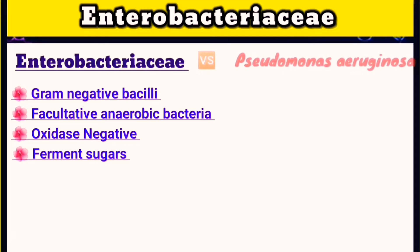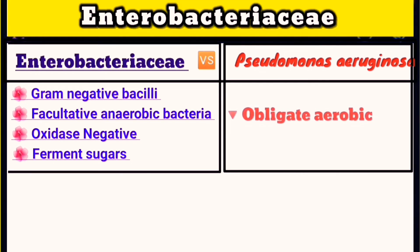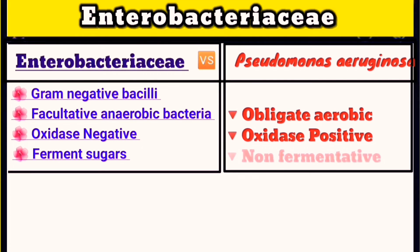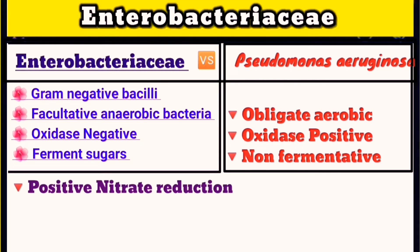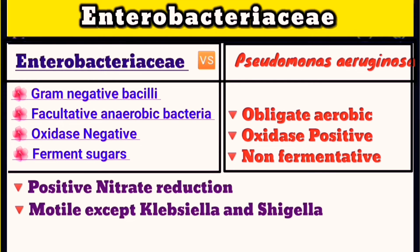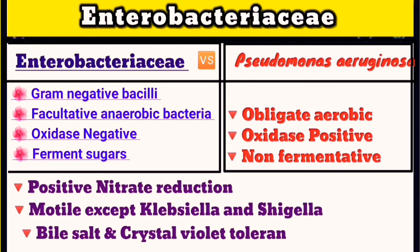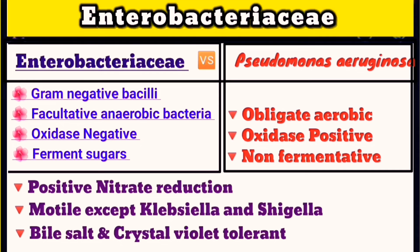Pseudomonas aeruginosa is a bacterium that shares many similarities with Enterobacteriaceae but has key differences: it is an obligate aerobe, oxidase positive, and non-fermentative of carbohydrates except glucose, which it utilizes via an oxidative pathway. Similarities include being positive for nitrate reduction and motility (with the exception of Klebsiella and Shigella), and being tolerant to bile salts and crystal violet. Media containing bile salts and crystal violet, like MacConkey agar and VRBG, are selective for gram-negative bacteria by inhibiting the growth of gram-positive organisms.